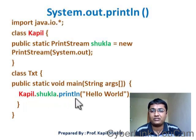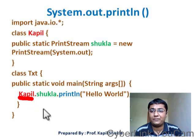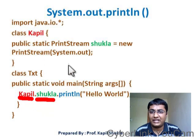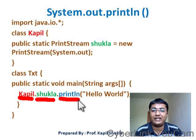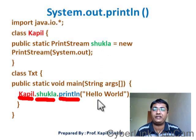Then we have created one class. You can see here that I have first written Kapil, which is the name of this class, then Shukla, which is the static field — that's why I can call it with the class name — and then the println function, which is actually a function of the PrintStream class. This code will print 'Hello World' on your screen.